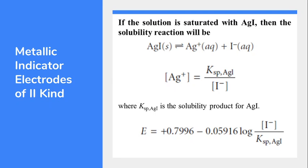The Ksp equation is: Ksp = [Ag+][I⁻] / 1, where AgI is a solid with activity of unity. Simplifying to get the concentration of Ag+: [Ag+] = Ksp / [I⁻].